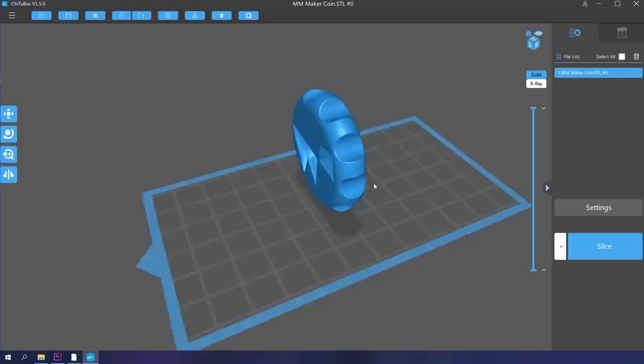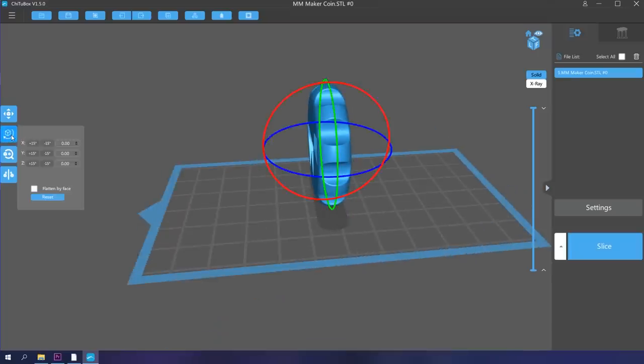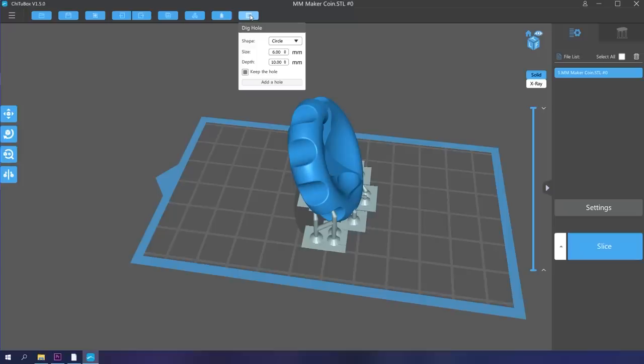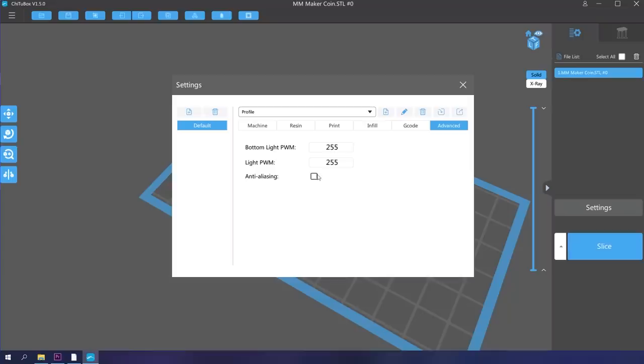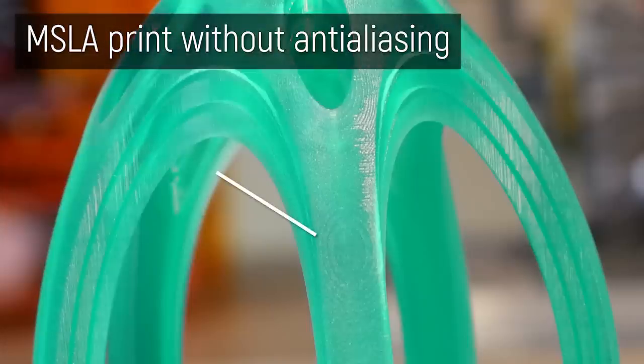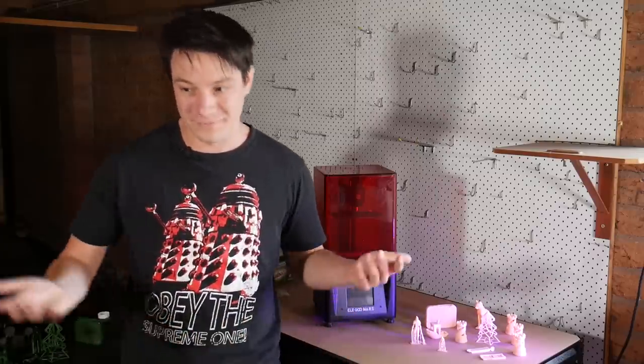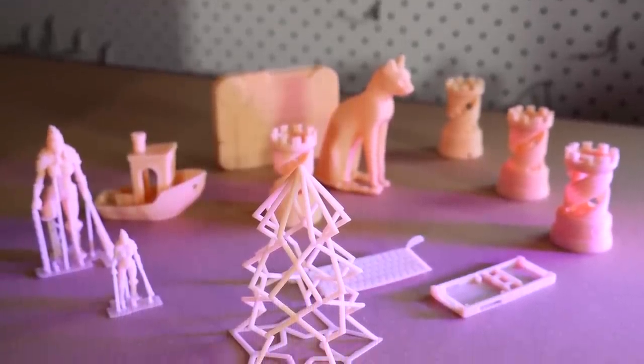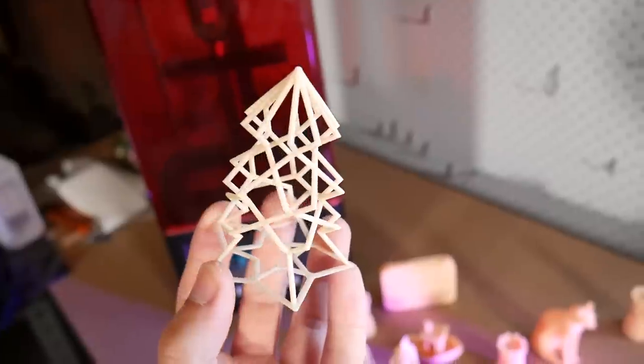For slicing, Elegoo recommends ChituBox and man, slicing for resin printers has come along in leaps and bounds in little over a year. You can now hollow objects and insert drainage holes right there in the slicer. You can even employ 3D infill and anti-aliasing is like a godsend. It almost completely removes the voxel-like print artifacts you used to see on earlier versions of this technology. It's honestly incredible and at least for the moment it's free.